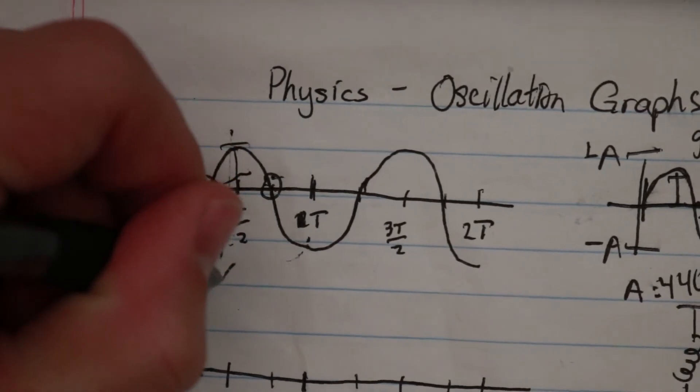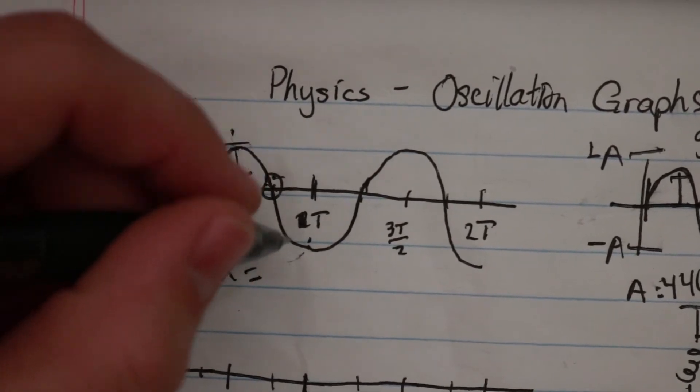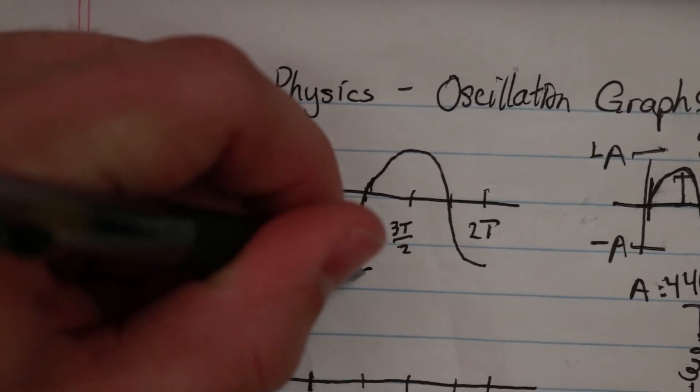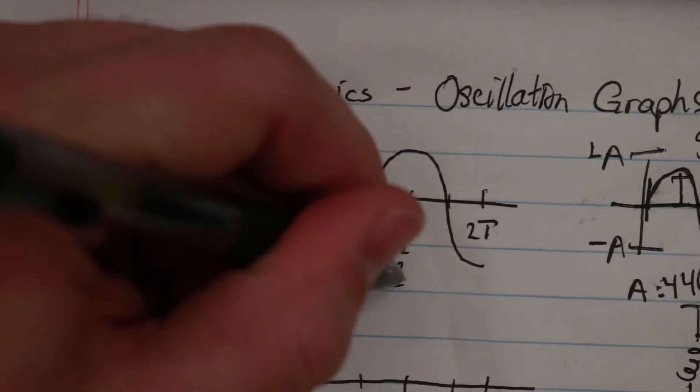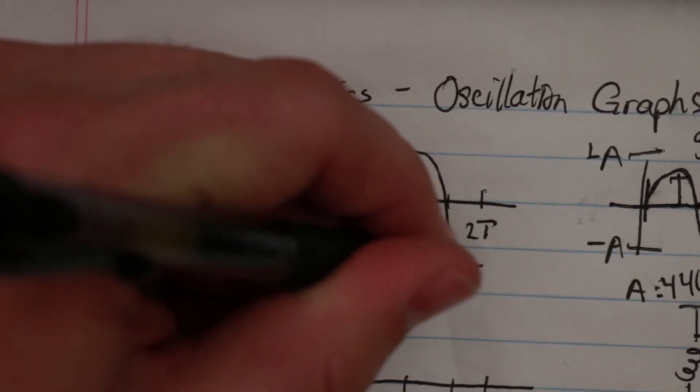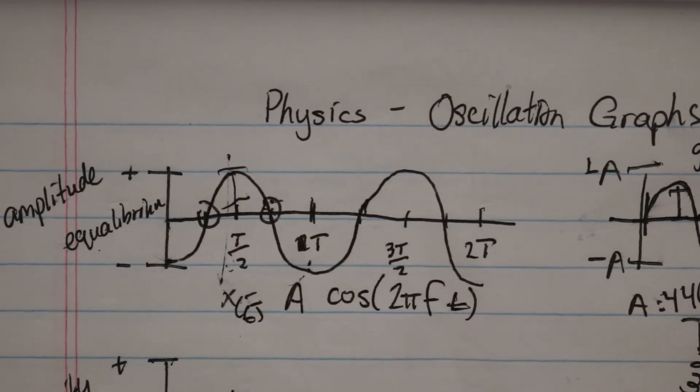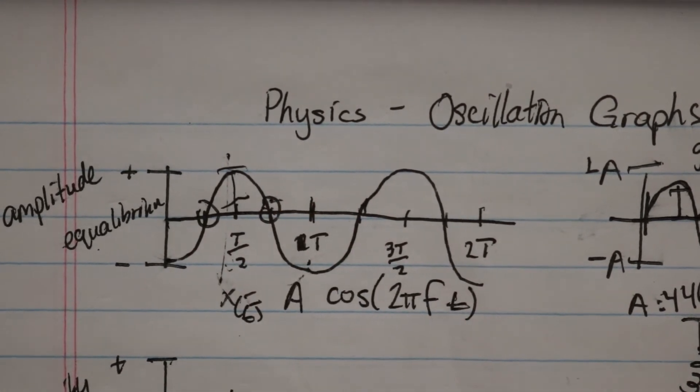This is calculated by the function x equals x of t, t being time, equals the amplitude times the cosine of 2π times the frequency times the time. And so that's how we get this graph out of any oscillation.